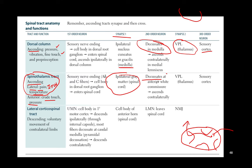That immediate decussation means it's going to be contralateral — any lesion anything upstream would be a contralateral deficit. The VPL is where the spinothalamic tract synapses, and the final synapse is at the sensory cortex.